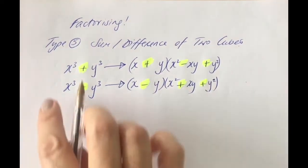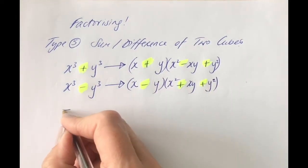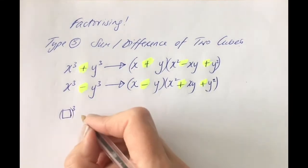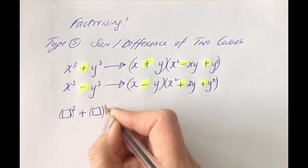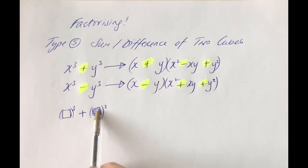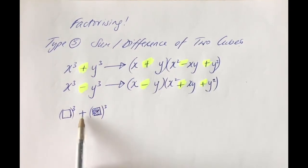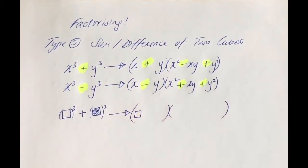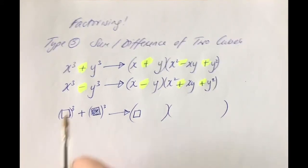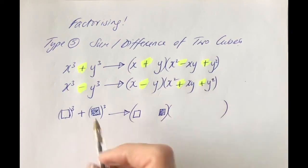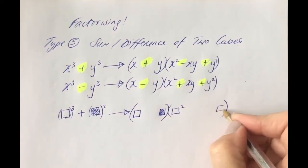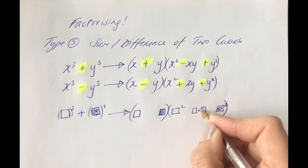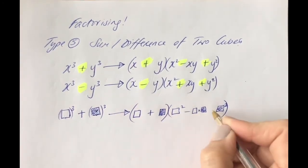Just to recap, because the x's might be a little confusing: whatever you have that's being cubed, make sure you figure out what that is. So you've got two different things, and you've got to consider what is being cubed in each. To factorise, take the cubed root of each term, then square each one, then multiply the two together. If it's the sum, the signs go plus, minus, plus.